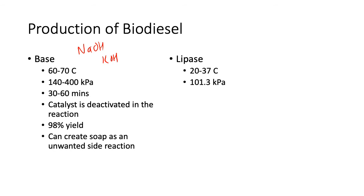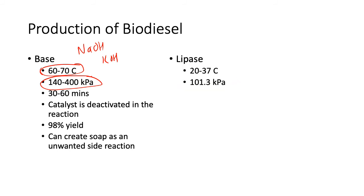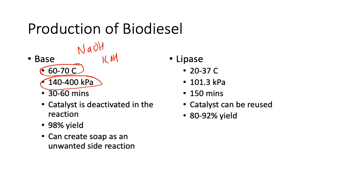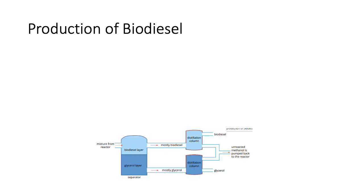The reason high pressure was needed with the base catalyst was to keep the methanol in liquid form at 60–70°C. Because the lipase reaction runs at a much lower temperature, the methanol remains liquid anyway, so no pressurization is needed. One disadvantage is that it takes much longer. However, the catalyst can be reused, and you don't get as much yield. On the positive side, soap is not created as an unwanted side reaction.